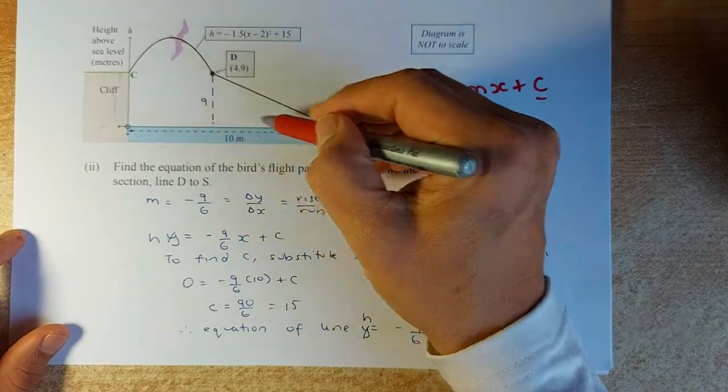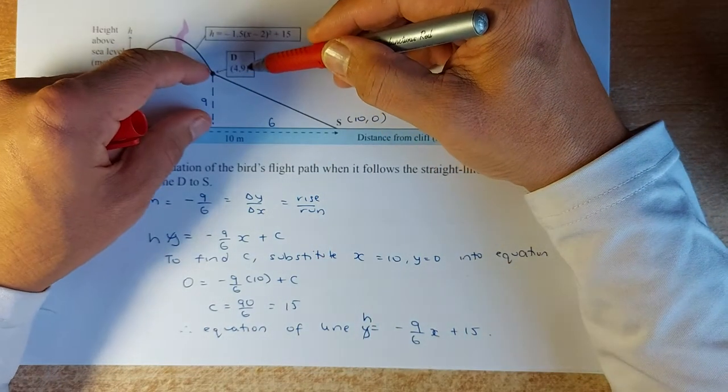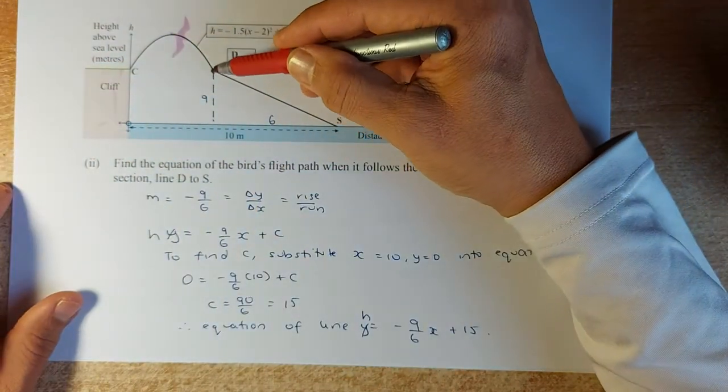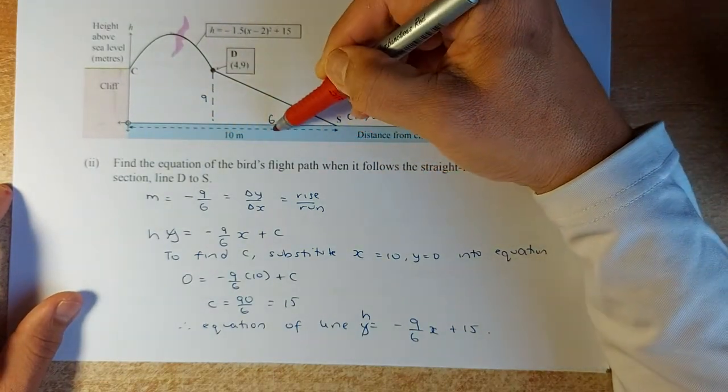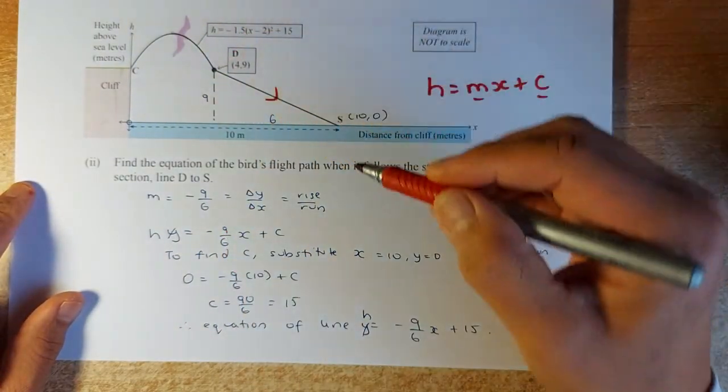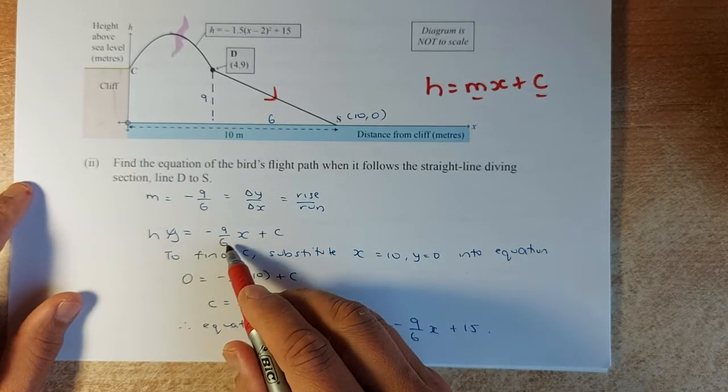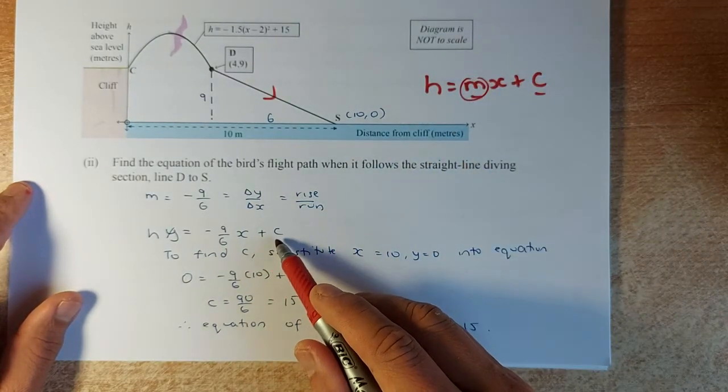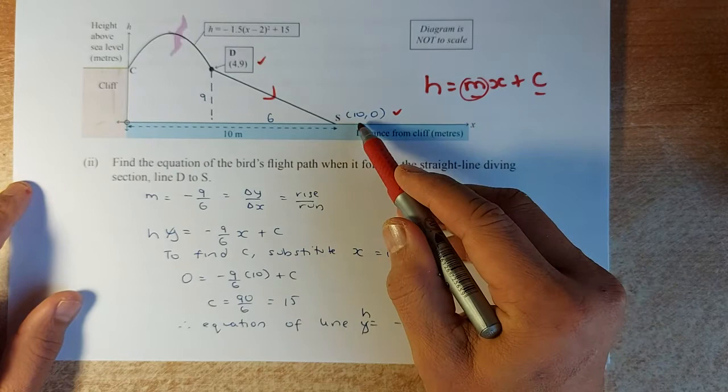m is found by using rise over run or change of y over change in x. If this point is 9 and this point is 0, the height 9 minus 0 is 9. And the run is 10 minus 4, which is 6. So the rise over run is 9 over 6. Since it's going downwards, the gradient is negative. So the equation is h equals -9/6 x plus c.